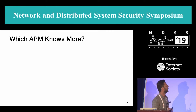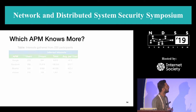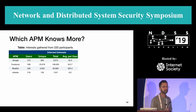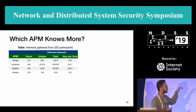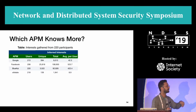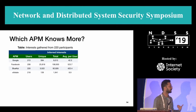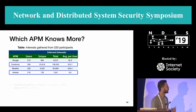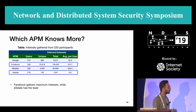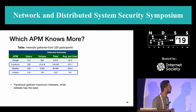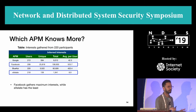To answer which APM knows more, this table shows the amount of information learned by each APM: the APM name, number of users, unique number of inferences in total, total number of inferences, and average number of inferences per user. Clearly, Facebook is the winner — they collect a large number of inferences per user, up to 500 on average. Exelate is the small player in the ecosystem, with much lower profiles, while BlueKai had a profile on every single user in our study.